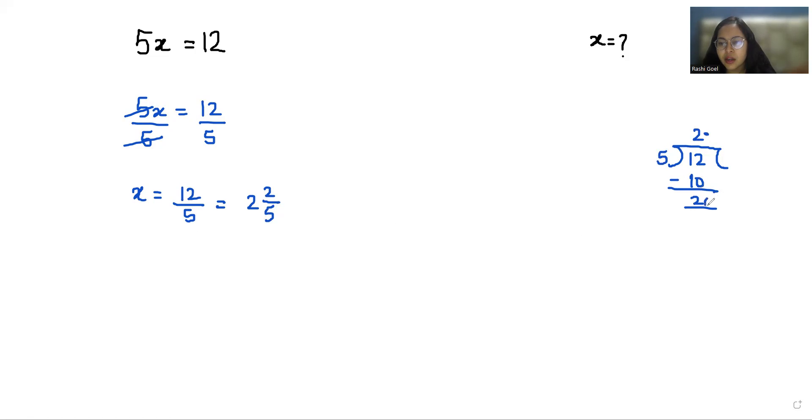Put the decimal here and add a 0. 5 times 4 is 20, and it cancels out. We can write it as 2.400 or simply 2.4.